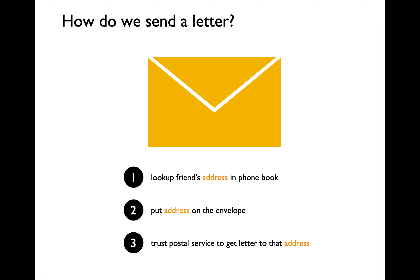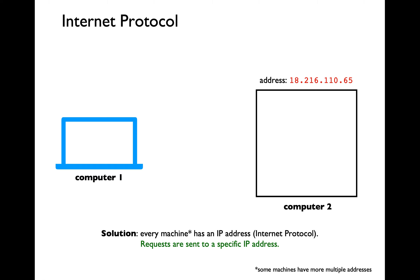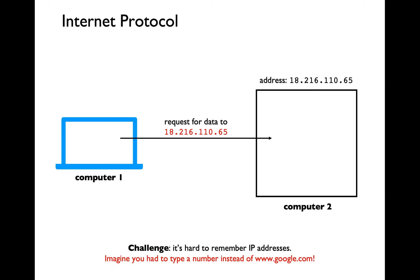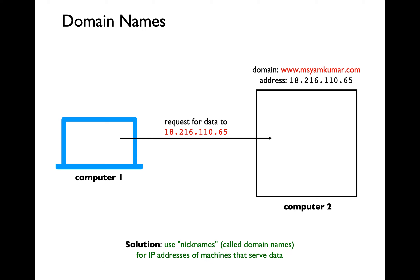Just like human beings have physical mailing addresses, computers have what are called IP addresses. IP stands for Internet Protocol. Here is an example of an IPv4 address — V4 stands for version 4. The other version is called IPv6. Once you know the IP address of the remote machine, you should be able to send a request directly to that particular IP address. However, human beings absolutely hate remembering numbers. Imagine how hard it would be if you had to type an IP address every time you want to search something on google.com — that would be terrible. That is why we have what are called domain names, which are far easier to remember.